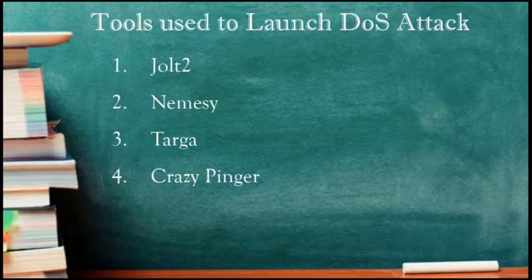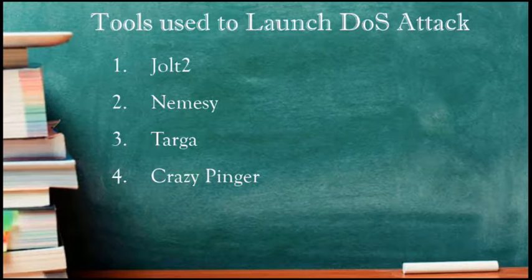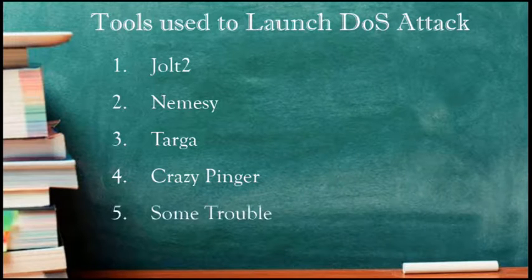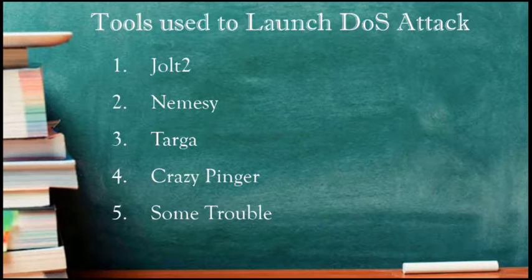The fourth tool is Crazy Pinger. This tool can send large packets of ICMP to a remote target network. The fifth tool is Some Trouble. It is a remote flooder or bomber.